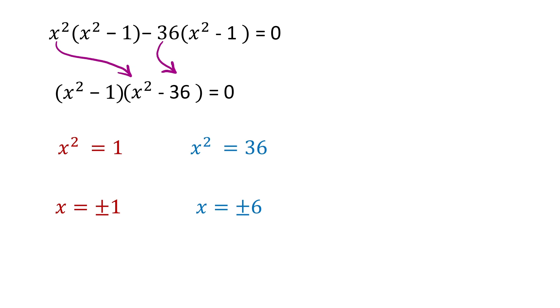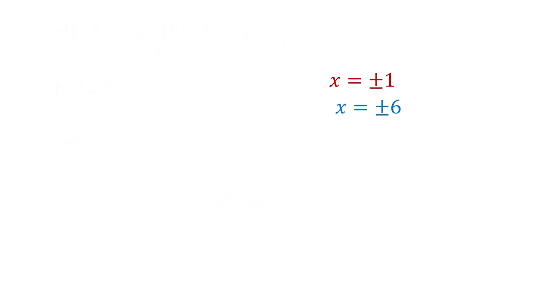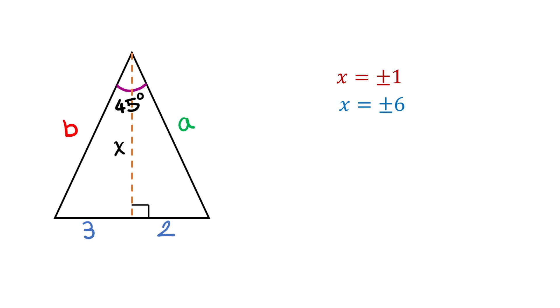So, this gives us x equals plus or minus 1 and plus or minus 6. But, x cannot be negative because it is the side length of this triangle and therefore, x equals either 1 or 6.